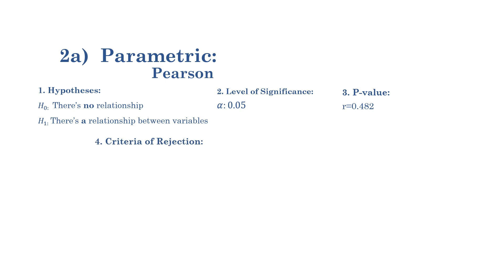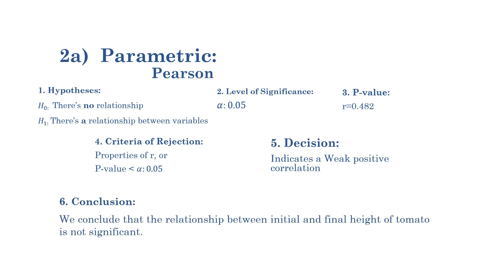Criteria of rejection: we can consider the properties of correlation, which I have mentioned in a few seconds, or even the p-value when it's less than the level of significance. The decision for this exercise, we could say that this indicates a weak positive correlation. And the conclusion, we conclude that the relationship between initial and final height of tomato is not significant.